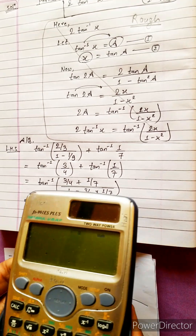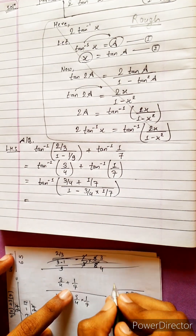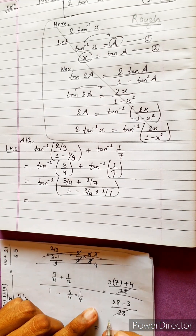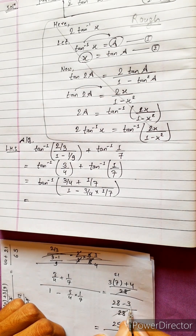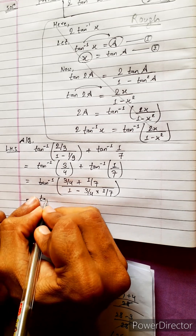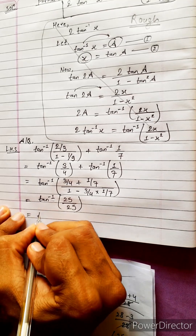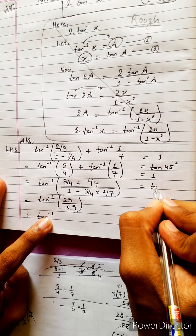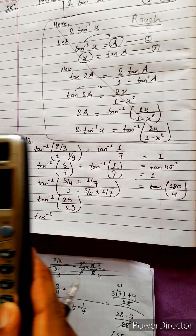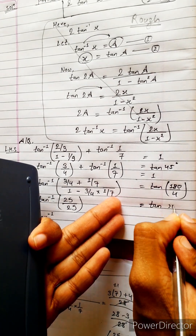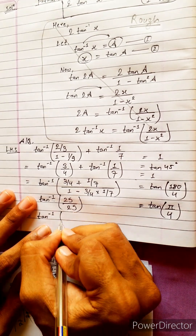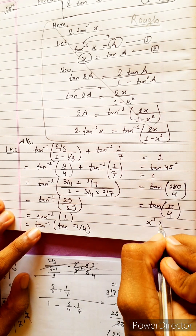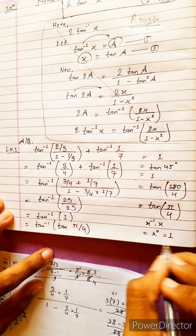21 plus 4 equals 25, upon 28 minus 3 equals 25. So 10·tan⁻¹(25/25) equals tan⁻¹(1), which equals 45 degrees. 45 degrees equals 180/4, which equals π/4. Therefore tan⁻¹(1) equals π/4.